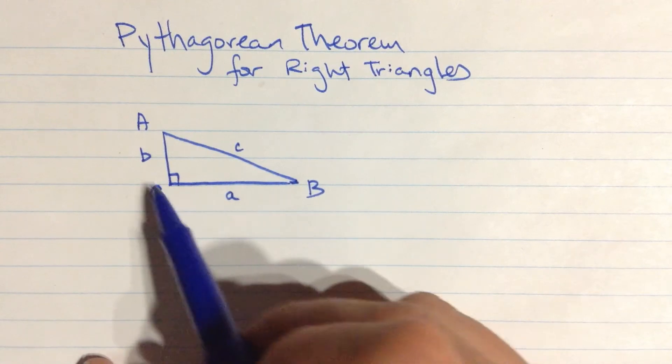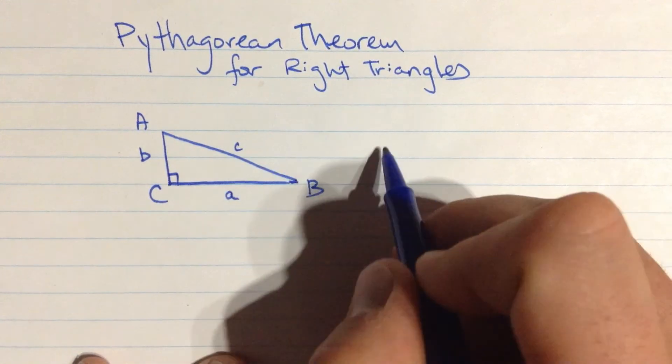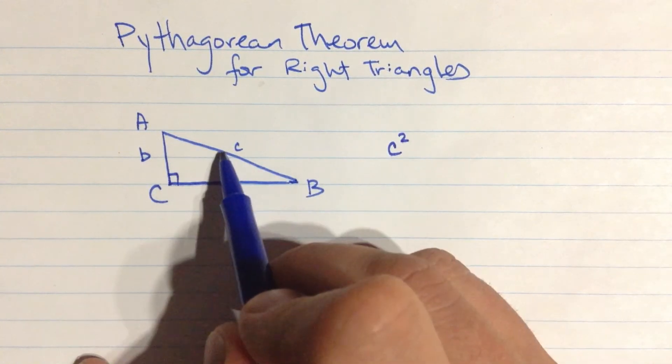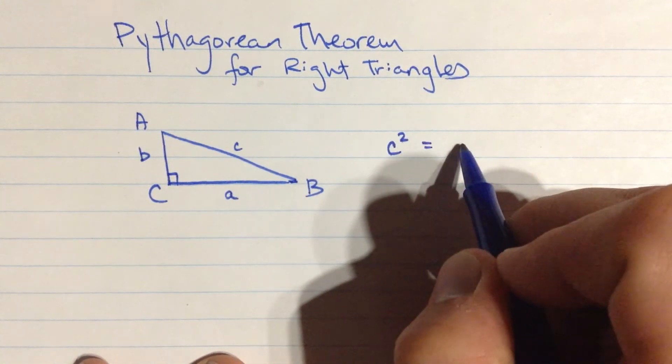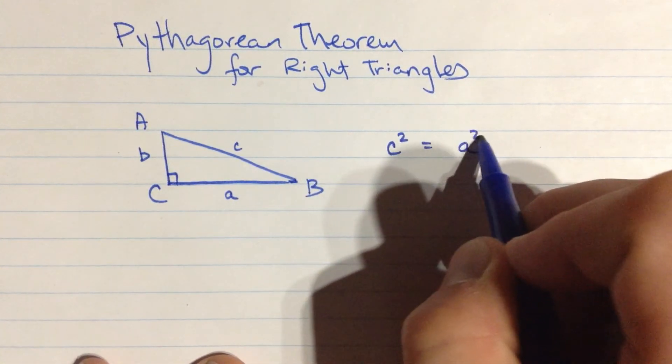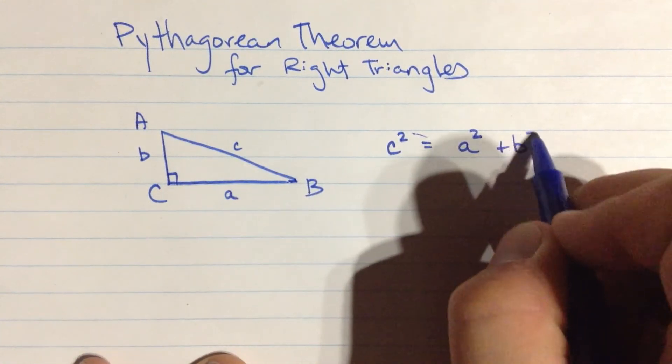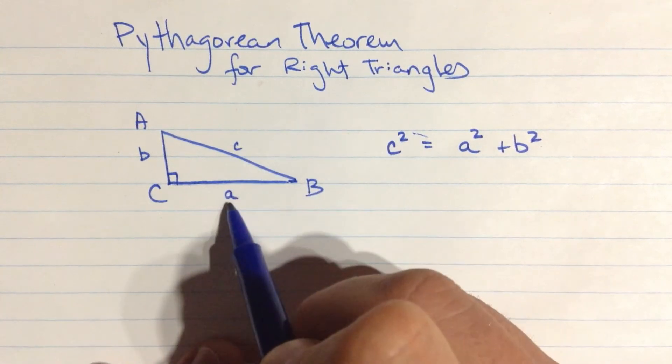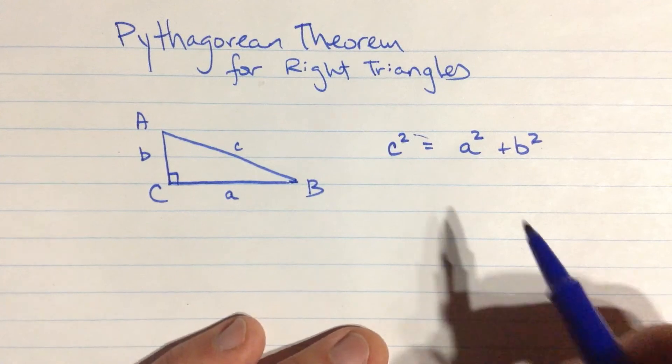And the Pythagorean Theorem says that if you set it up this way, the hypotenuse side, the longest side, which is opposite the 90 degree angle, if you square its length, you get the sum of the squares of the other two sides, or a squared here, plus b squared over here. So you square this side, and you square this side, and you square this side, and you have this relationship between those three squares.